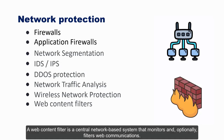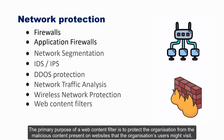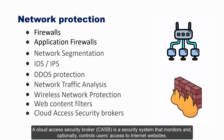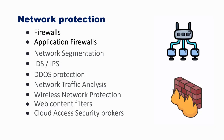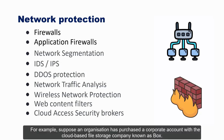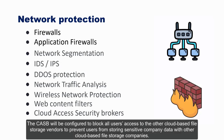A Web Content Filter is a central network-based system that monitors and optionally filters web communications, protecting the organization from malicious content on websites that users might visit. A Cloud Access Security Broker (CASB) is a security system that monitors and optionally controls users' access to internet websites, protecting sensitive information by observing which service providers can be accessed by users and controlling or blocking access as necessary. For example, a CASB can be configured to block all users' access to unauthorized cloud-based file storage vendors to prevent sensitive company data from being stored externally.